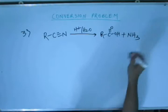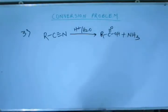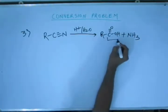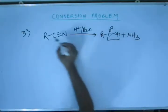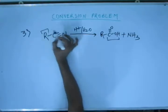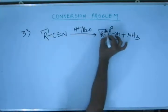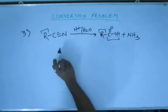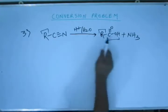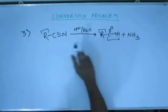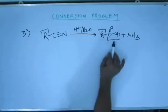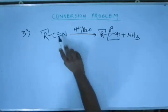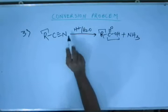When hydrolysis occurs, the cyanide group gets converted to a carboxylic acid group. The R part remains the same. To write the product, you simply convert CN to COOH. The nitrogen will go on to form ammonia gas.